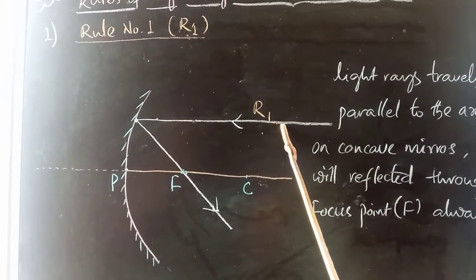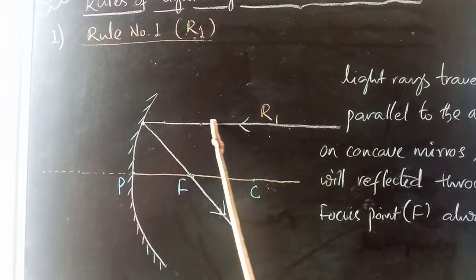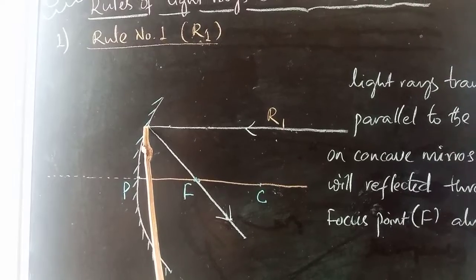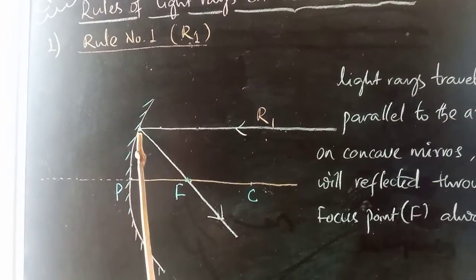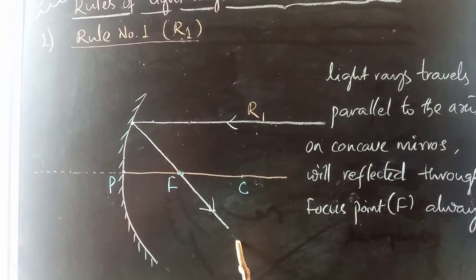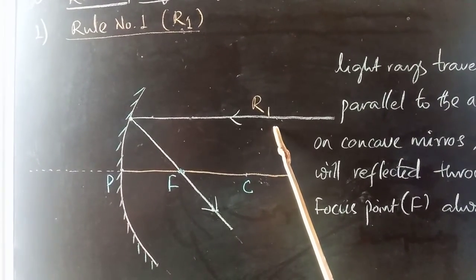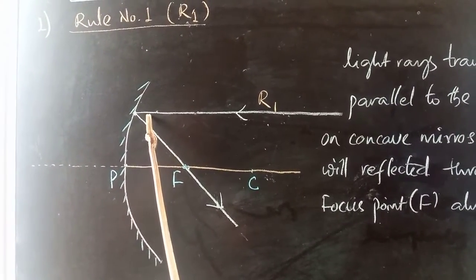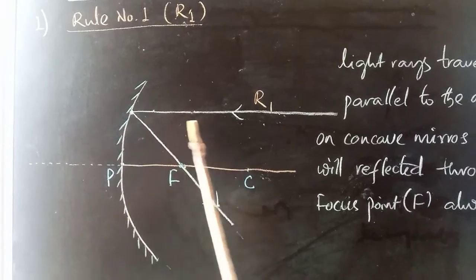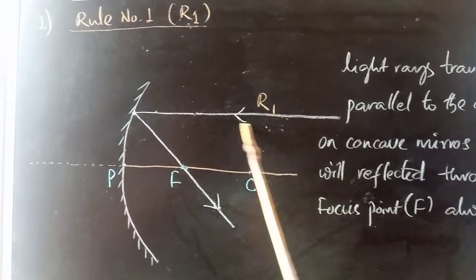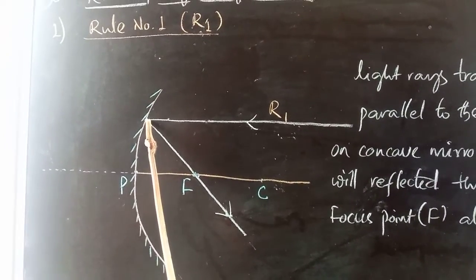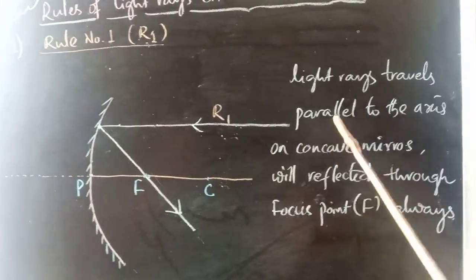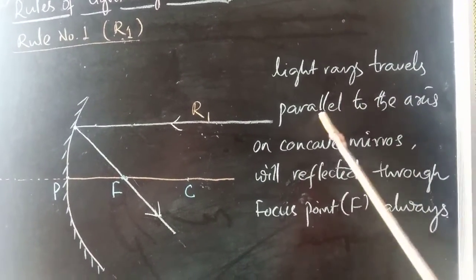When the incident ray, or a light ray, travels parallel to the principal axis and is incident on this point, it will go through the focal point — just like I will draw here. So this is Rule Number One: every parallel light ray incident on the concave mirror will go through the focal point always.